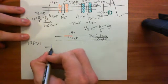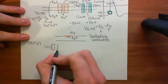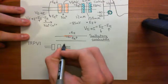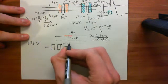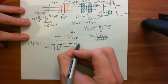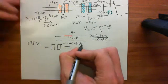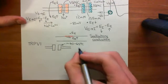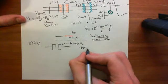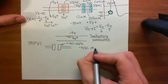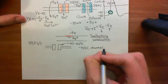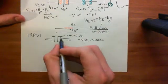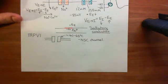Let me draw it here within the plasma membrane. When the temperature goes above around 40 to 45 degrees Celsius, the TRPV1 channel will open and start allowing sodium and calcium ions to enter the cell. Remember, it is a non-selective cation channel — an NSC channel — so it is actually permeable to sodium, calcium, and potassium. It's just that at normal resting membrane potential, the permeability to potassium isn't really that relevant.